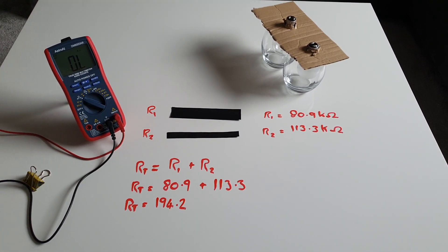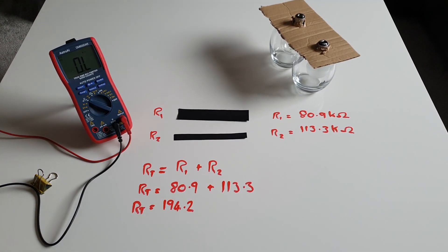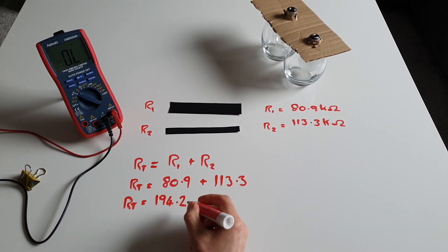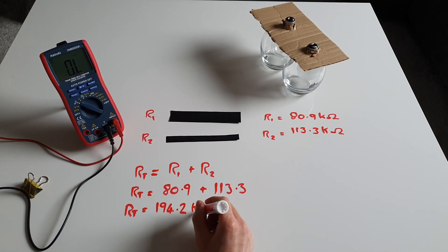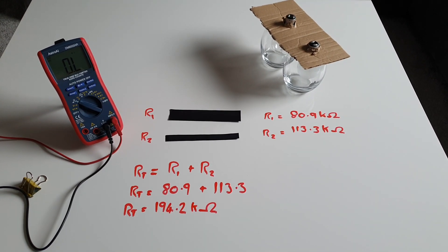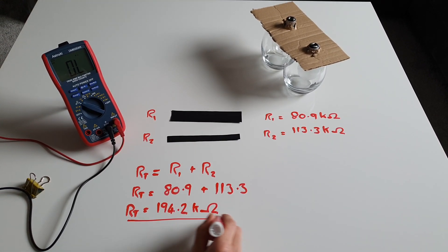Now because we're adding kilo ohms, the units remain the same, kilo ohms. Okay so we've done the theory, let's see if the practice confirms.